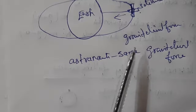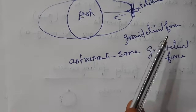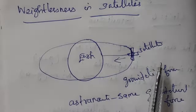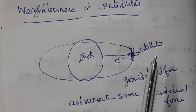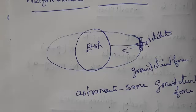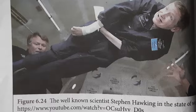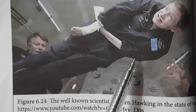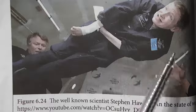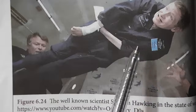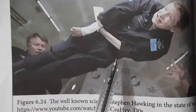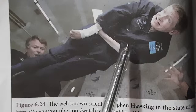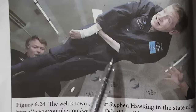Not only astronauts — all objects inside the satellite are in the state of weightlessness. Weightlessness in satellites occurs because the astronauts experience the same gravitational force as the satellite experiences. Look at this figure — this is Stephen Hawking. In 2007, scientists designed a space room, evacuated the air, and this scientist experienced the state of weightlessness — he was in a flying state. Watch this video on YouTube.